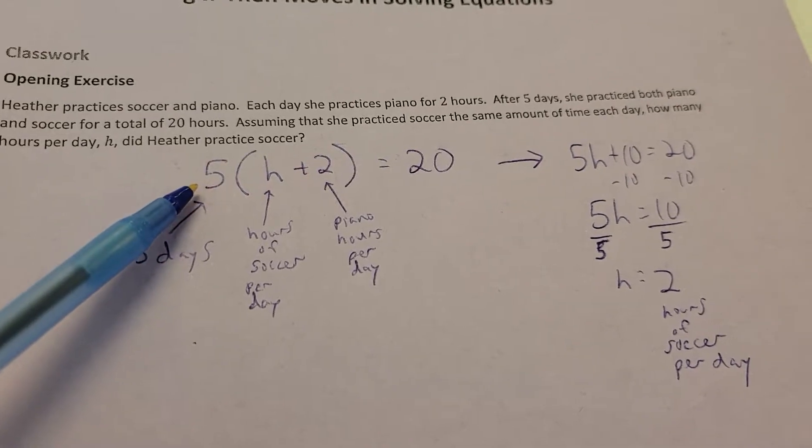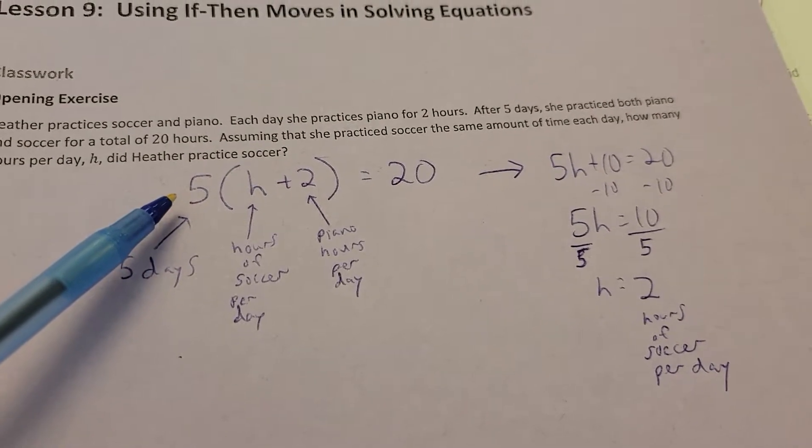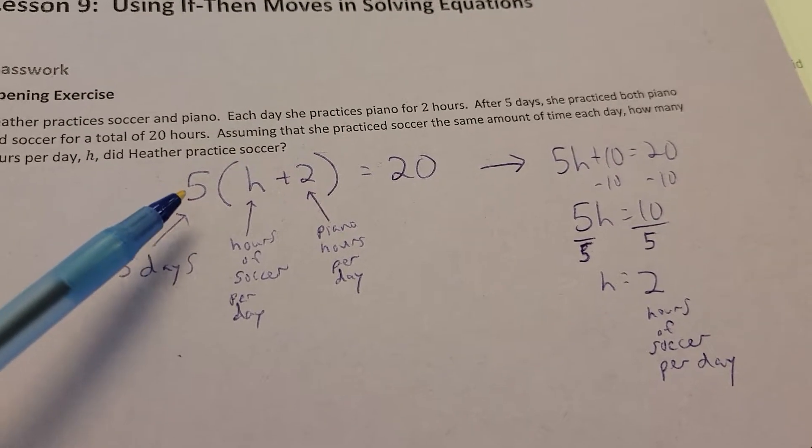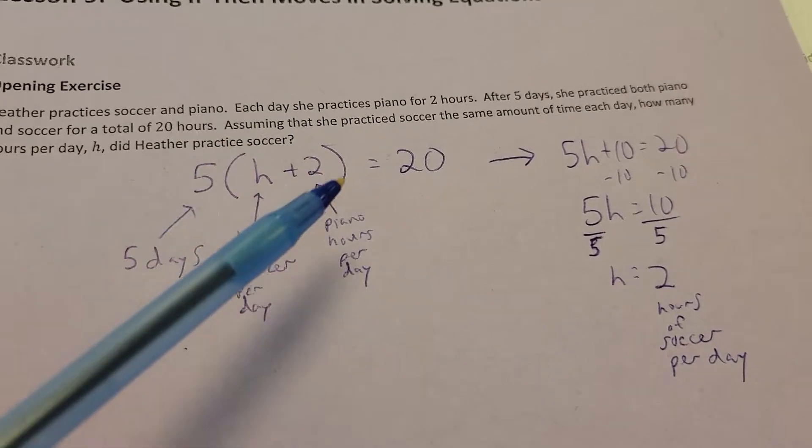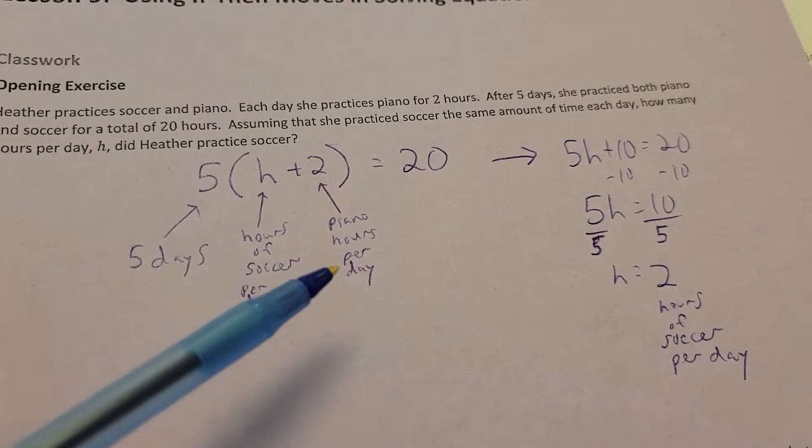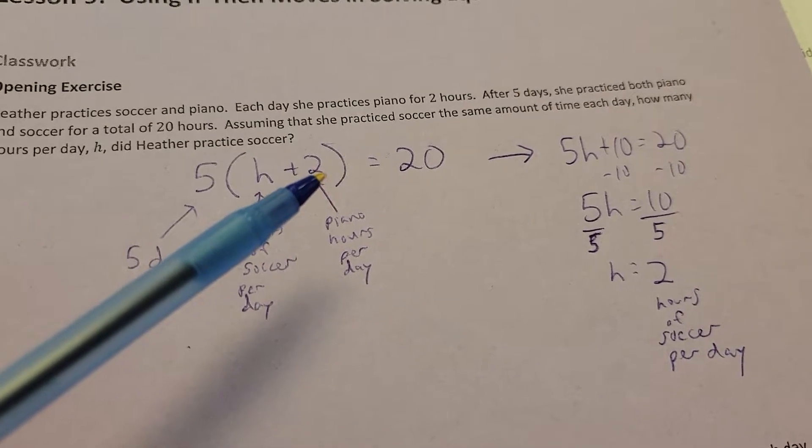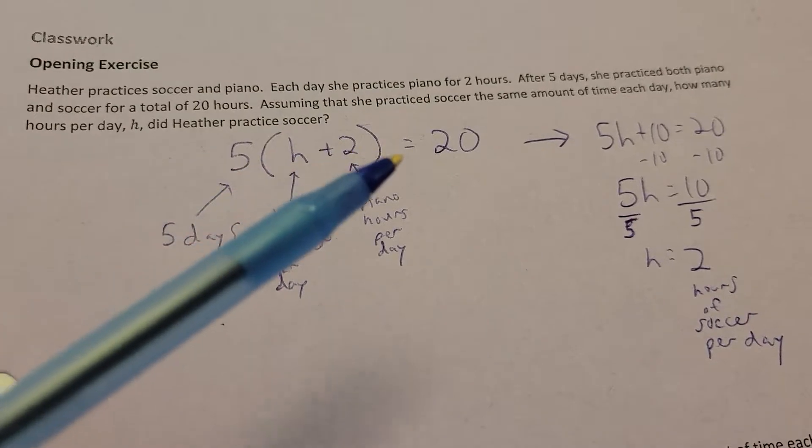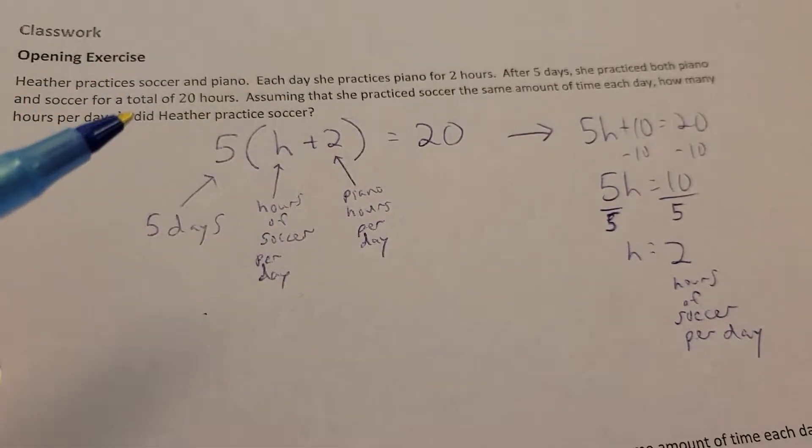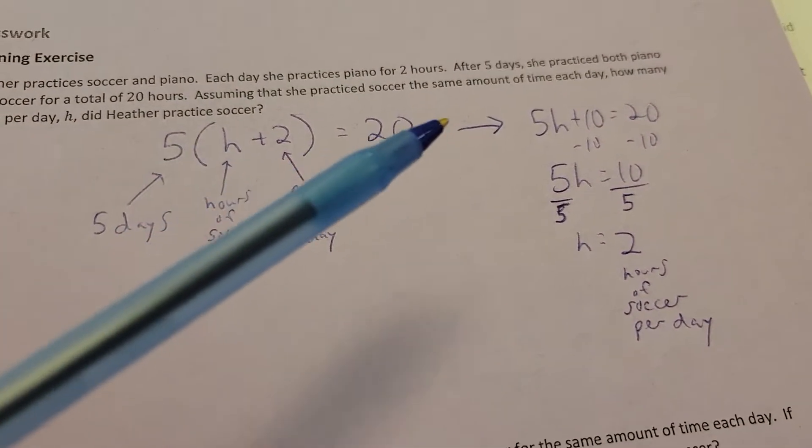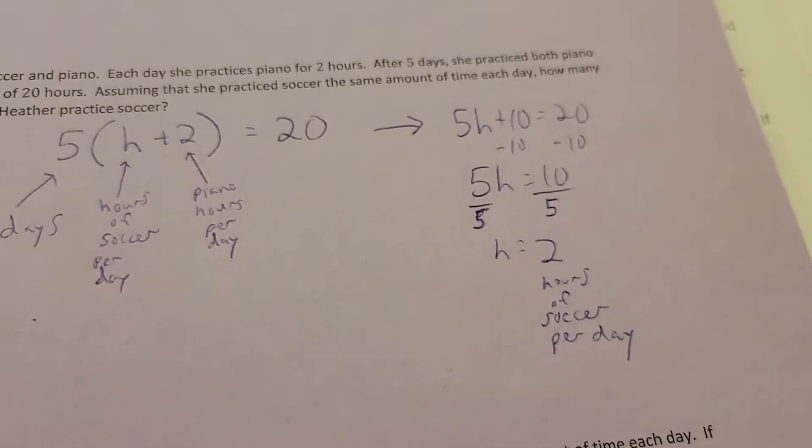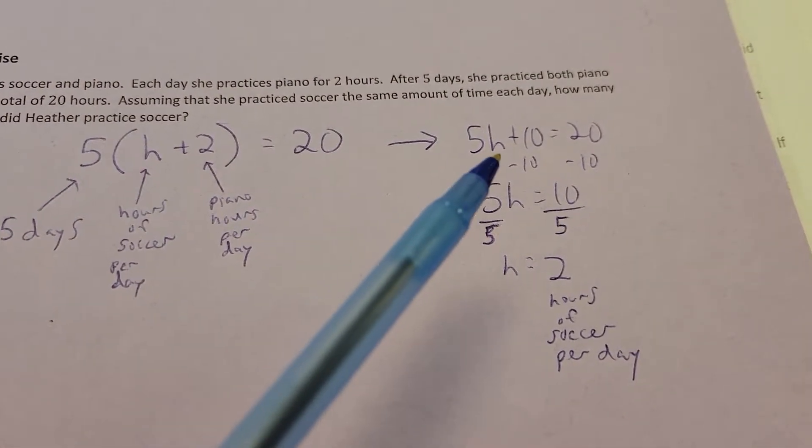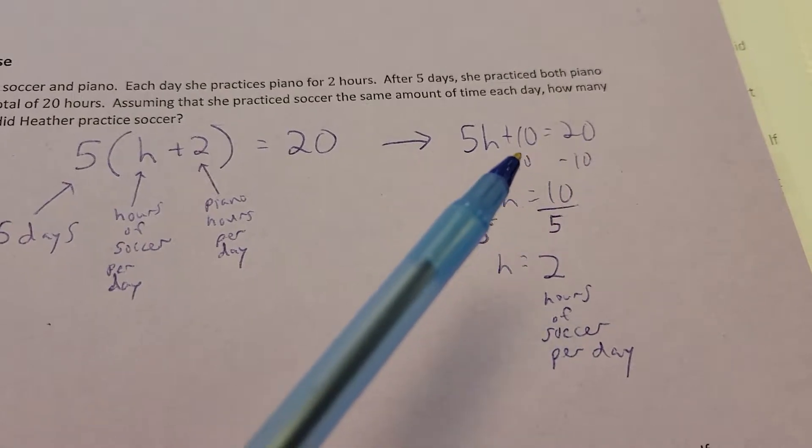So, the five comes from five days. We're going to be able to repeat a scenario, so we're going to use the distributive property. Five times something's going to repeat itself. We're going to use H for hours of soccer, and this is the amount of piano hours. They said that she does that for two hours each day. And all that adds up to a total of 20. So, by the time I actually distribute that out, I get 5 times H plus 10.